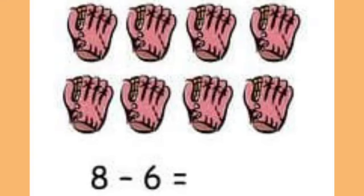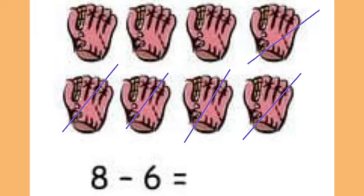See the fifth one. How many pictures are here? 1, 2, 3, 4, 5, 6, 7, 8. Here given 8 minus 6 equal to dash. So we want to cancel the pictures — 6. 1, 2, 3, 4, 5, 6. So the answer is 2. 8 minus 6 equal to 2.